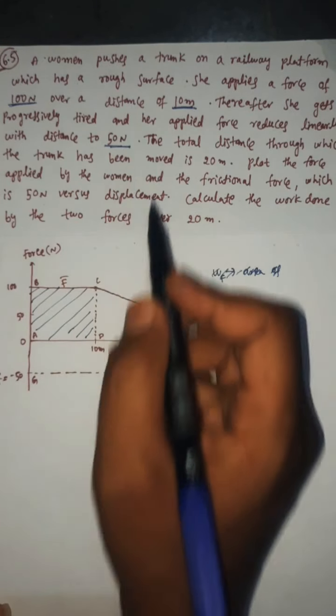Plot the force applied by the woman and the frictional force — which is 50 Newtons — versus displacement. In this force versus displacement graph, the force applied by the woman is given on the positive x-axis. The frictional force is on the negative axis — that is, minus 50 Newtons — since it opposes the motion of the trunk.